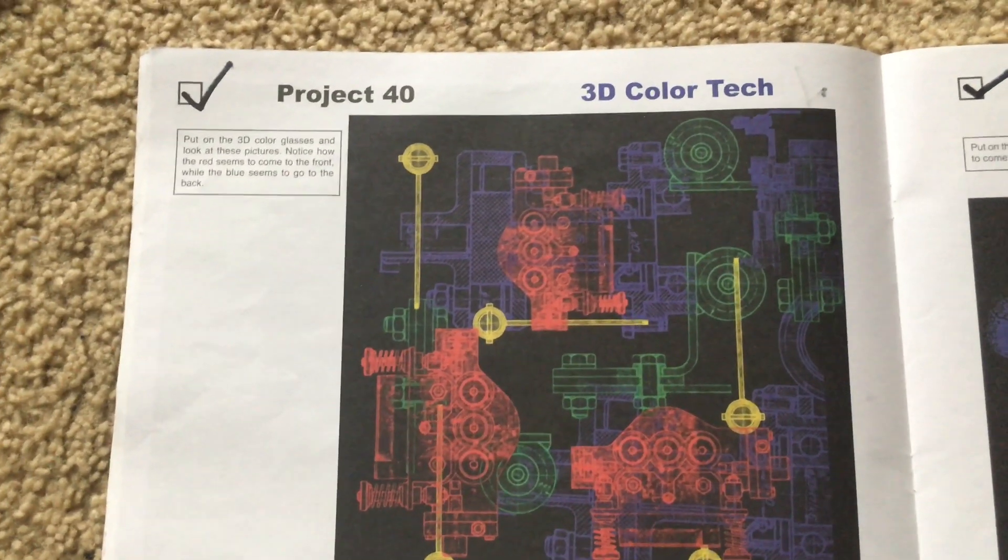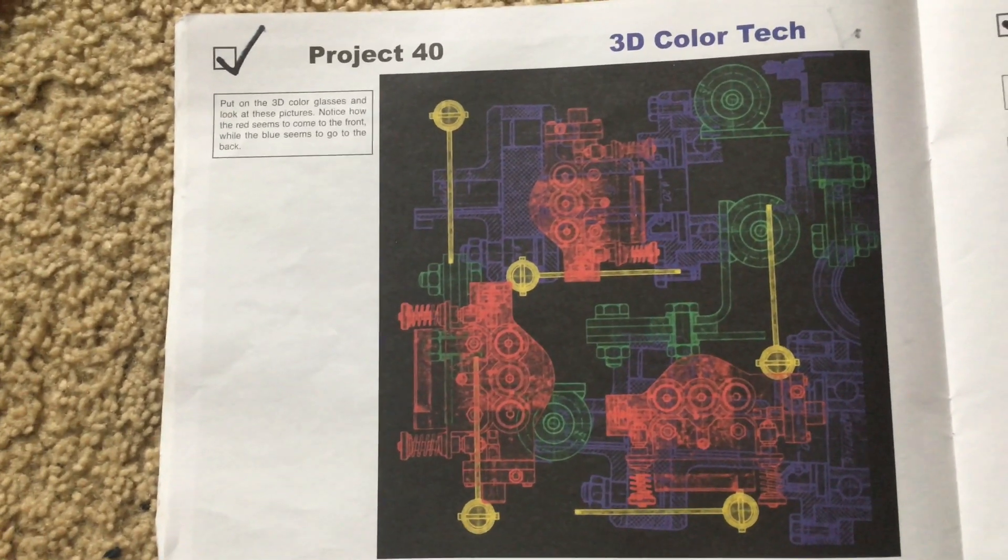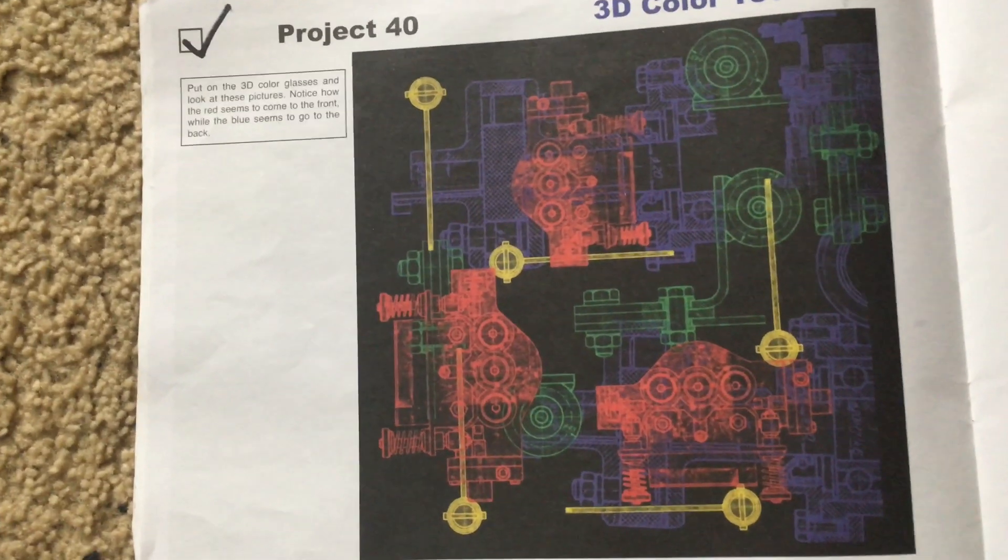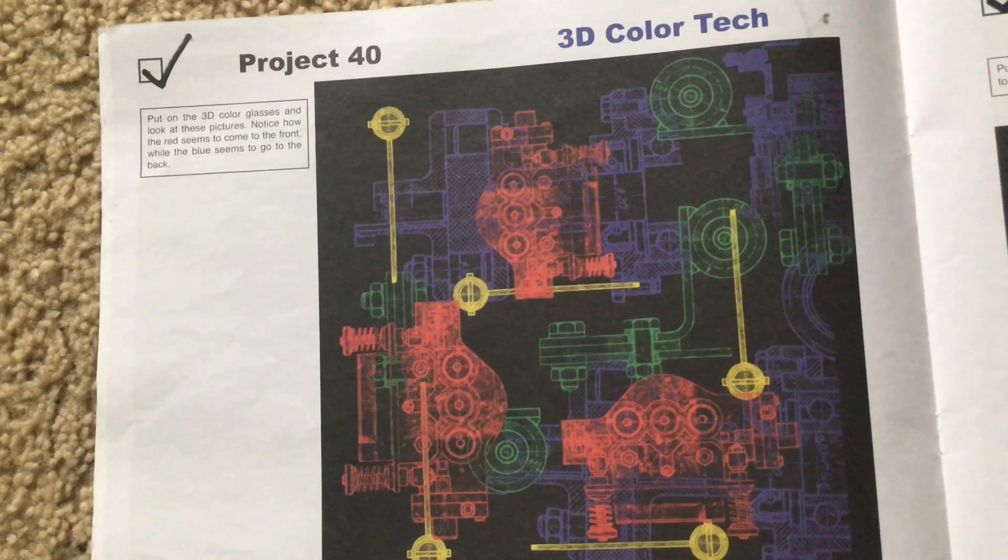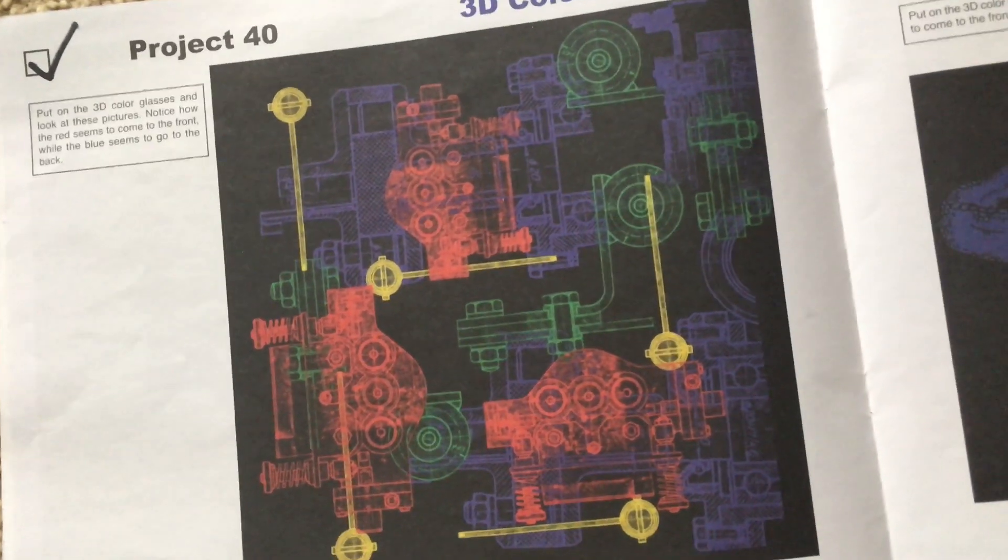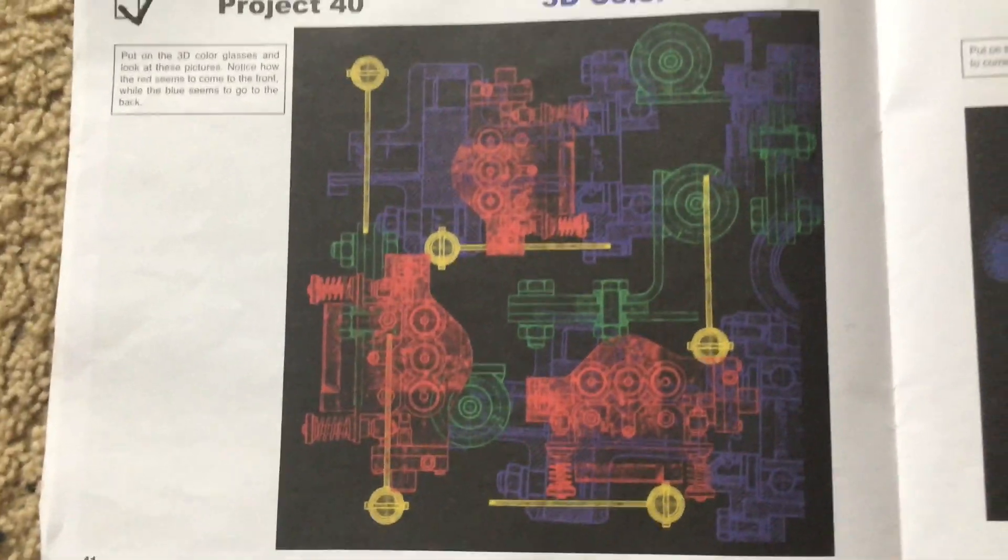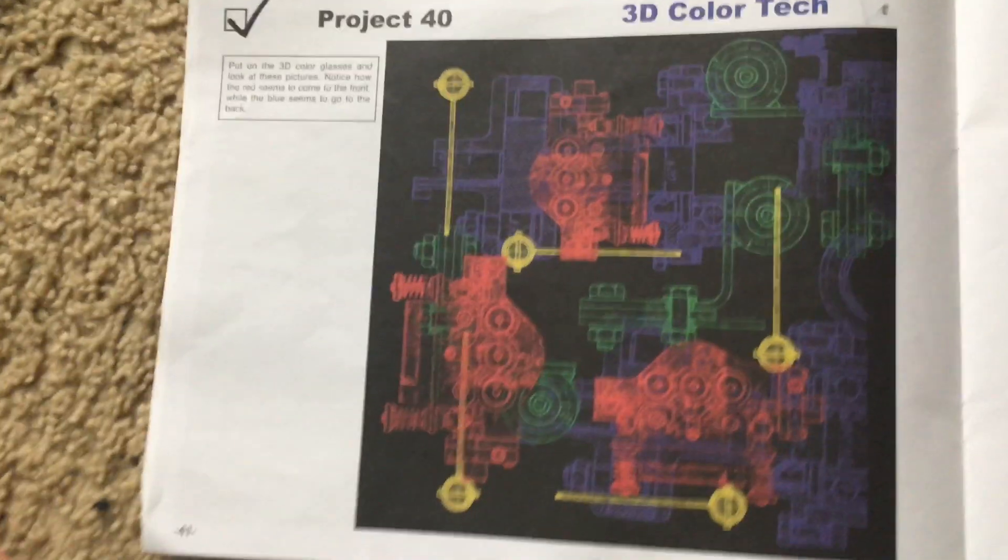Project 40, 3D Color Tech. For this project you will view color diagrams of what look like machinery or engines which are green, blue, yellow, and red using the 3D color glasses.